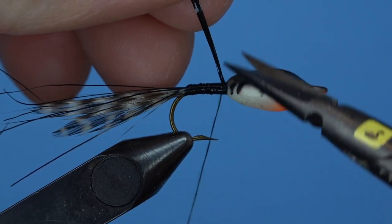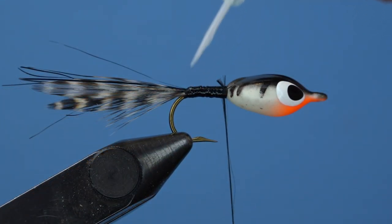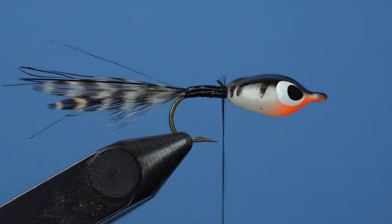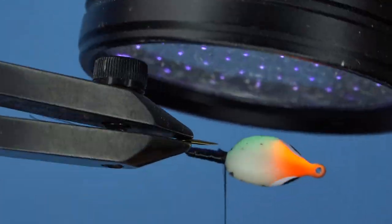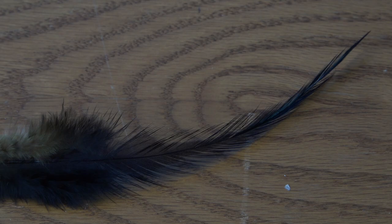Now angel hair is a pretty delicate material, so it's important to add some protection. Once you secure your angel hair at the front, brush on a bit of UV resin and hit it with the light so that this material doesn't slip off or get snipped somewhere during the tying process, and it'll absolutely protect it later on when those aggressive bluegills are crushing on it.